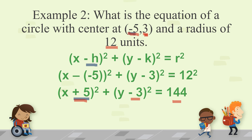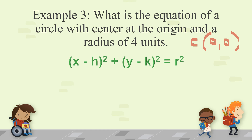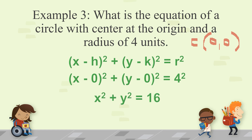Example number 3: What is the equation of a circle with center at the origin and a radius of 4 units? Center at the origin means (0, 0), so h is 0 and k is 0, and r is 4. Substituting: x minus 0 squared plus y minus 0 squared is equal to 4 squared. Since those are zero, we simplify to x squared plus y squared is equal to 16. This is the equation of the circle.